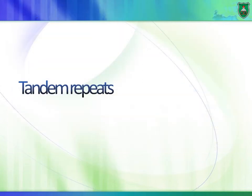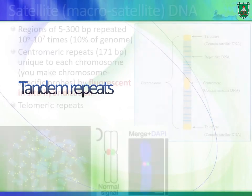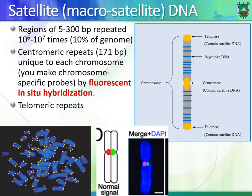Let's talk about the different types of tandem repeats. We have satellites, also called macro-satellites of DNA, which are made of repeated sequences. These sequences are about 5 to 300 base pairs and are repeated millions of times, making up a large portion of the human genome.